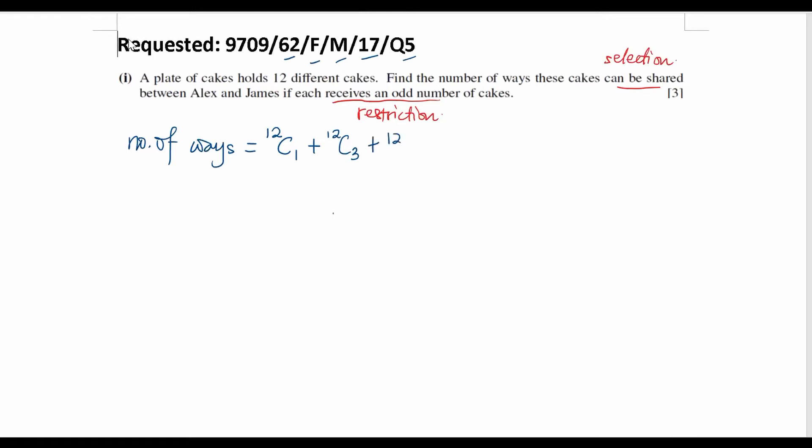So what does it mean? It means that 12 different cakes and 3 of them we select and give it to Alex. Then the remaining 9 which is also an odd number of cakes given to James. Or 12C5, and it has a certain pattern. 5 different cakes are selected from 12 and given to Alex. Then the remaining 7 which is also an odd number of cakes given to James. Or 12C7 until 12C11.